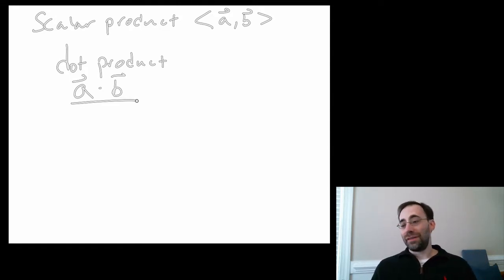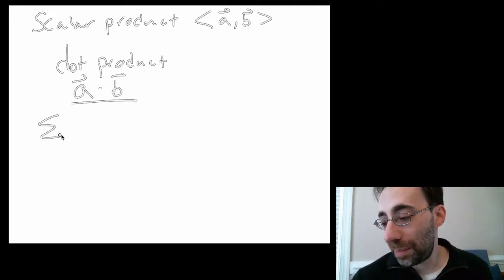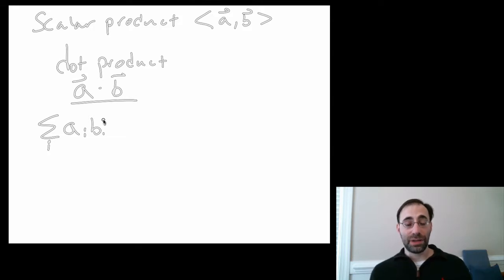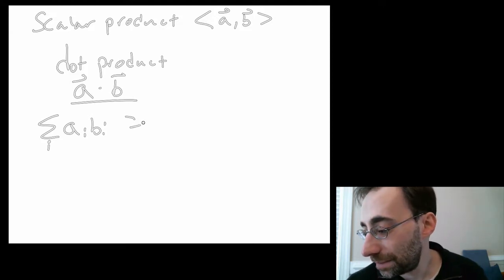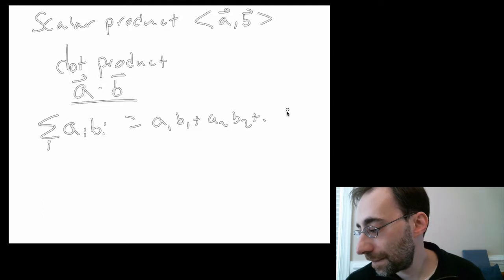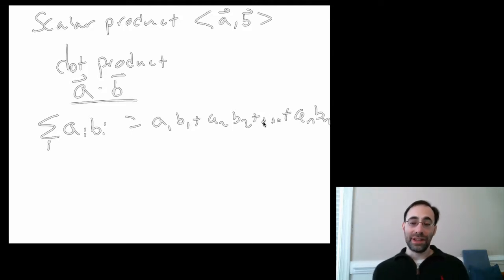Despite all this nomenclature and stuff, the dot product is actually relatively straightforward. The general function, the general operation looks like this: the sum over i of ai bi. So you take the first component of a times the first component of b, you multiply them, you add that product to the second component of a times the second component of b, and so on and so forth. That's the dot product in general.